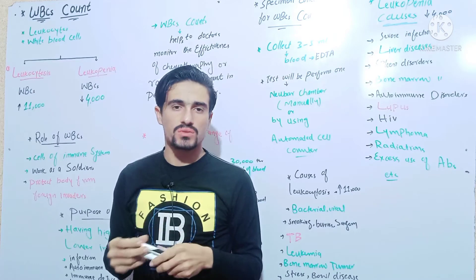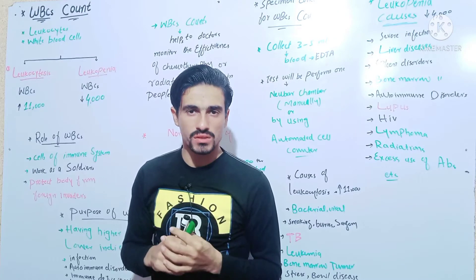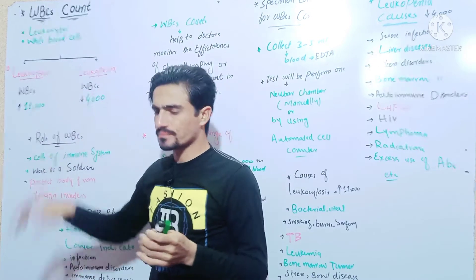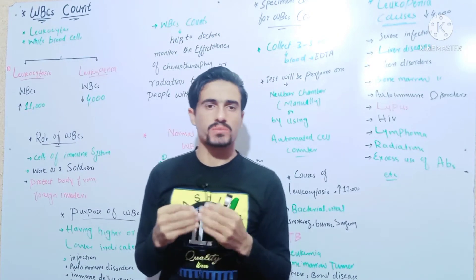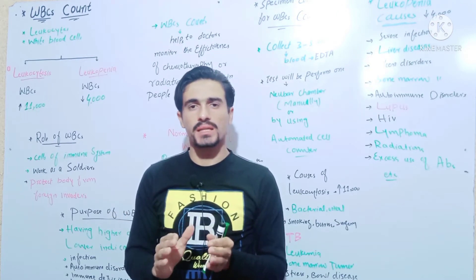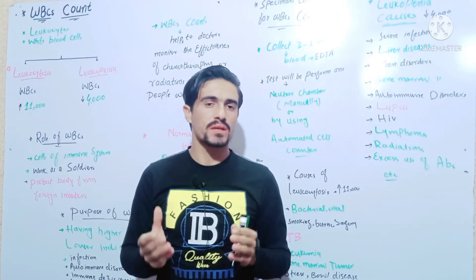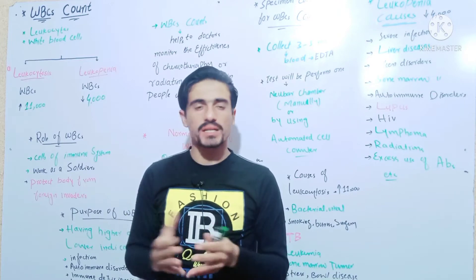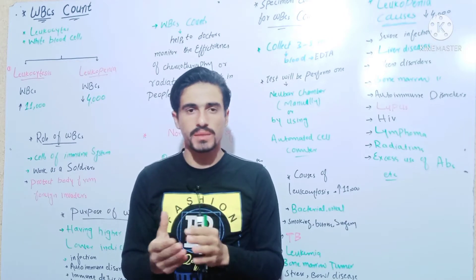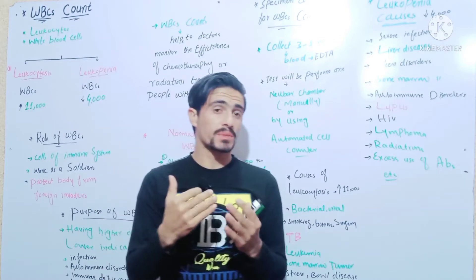For WBC counts, there are two key terminologies: leukocytosis and leukopenia. The suffix '-cytosis' means an increase in cells, so leukocytosis means leukocytes are increasing. '-Penia' means decreasing, so leukopenia means leukocytes are decreased below the normal range.